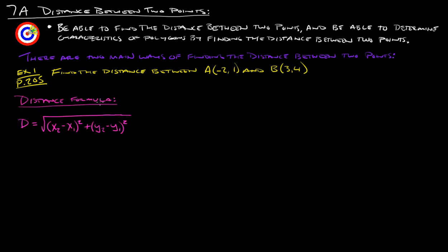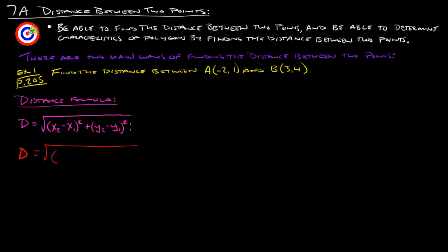The book takes you through using the distance formula, which works out great — works every time. You did this in geometry as well. So let's take a look at doing this with the distance formula. With that, we've got: distance equals the square root of (x2 minus x1) squared plus (y2 minus y1) squared.